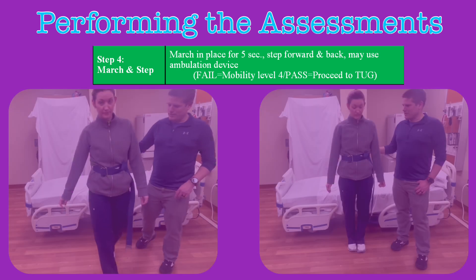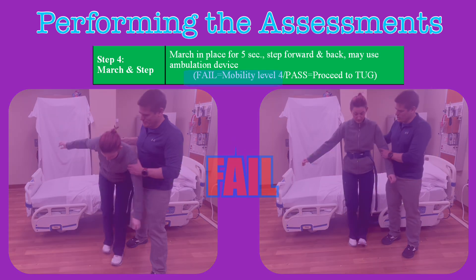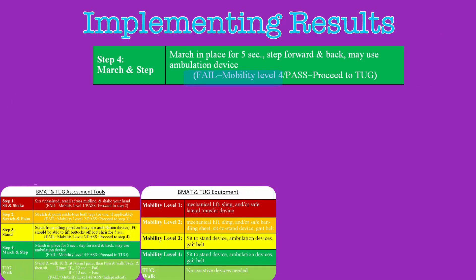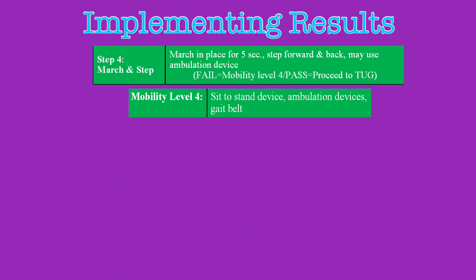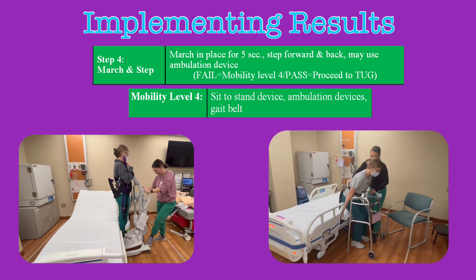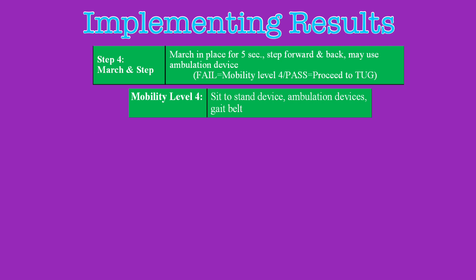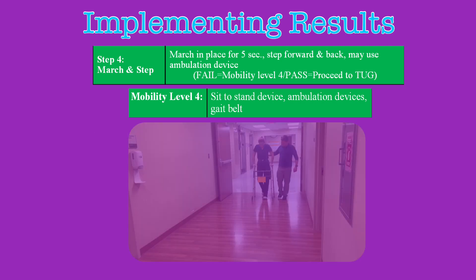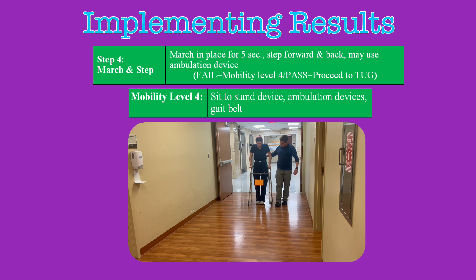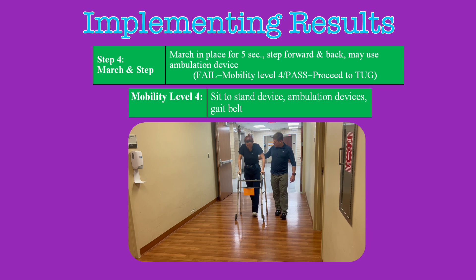If they cannot perform both of these tasks, they fail step four and are designated a mobility level four patient. At level four, appropriate transfer equipment could be a sit-to-stand device or ambulation devices such as walkers, canes, and a gait belt. Level four patients may be able to ambulate with a gait belt and some supportive assistance from a provider. Use of the gait belt and walker are explained in separate videos.